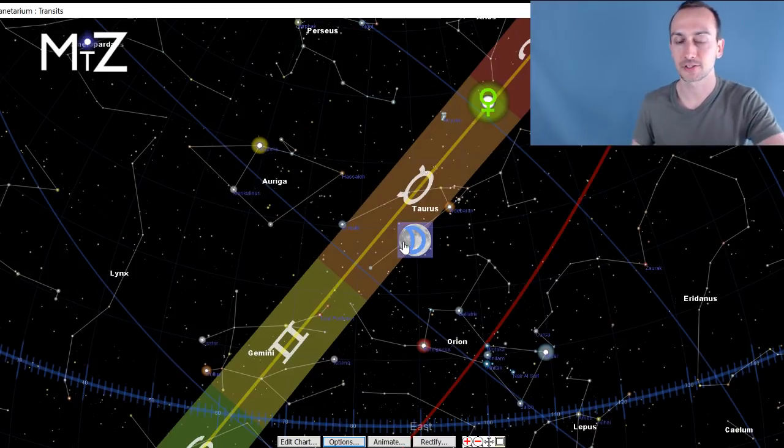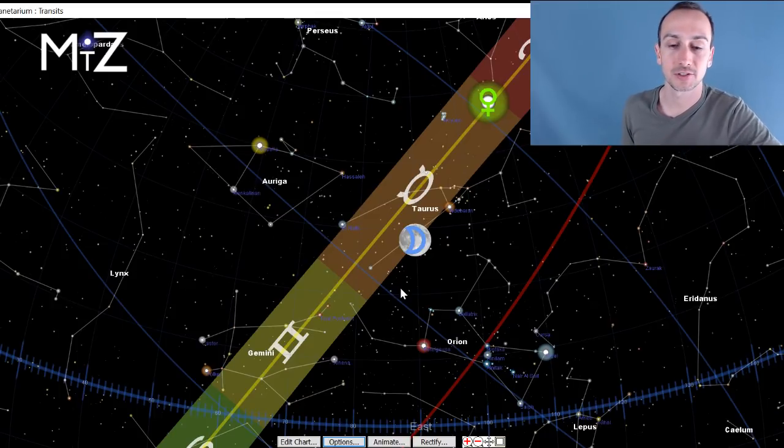All right, so here's the sky for this Thursday. Again, this channel is for Sidereal Astrology. We're using the actual size of the constellations. So do check out the link down below for more information.